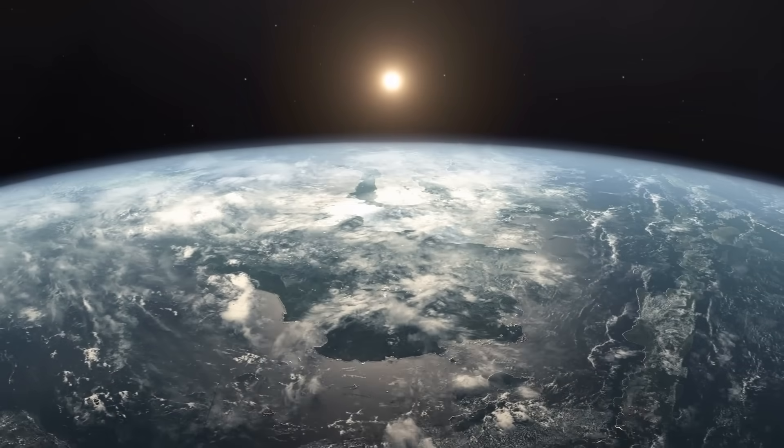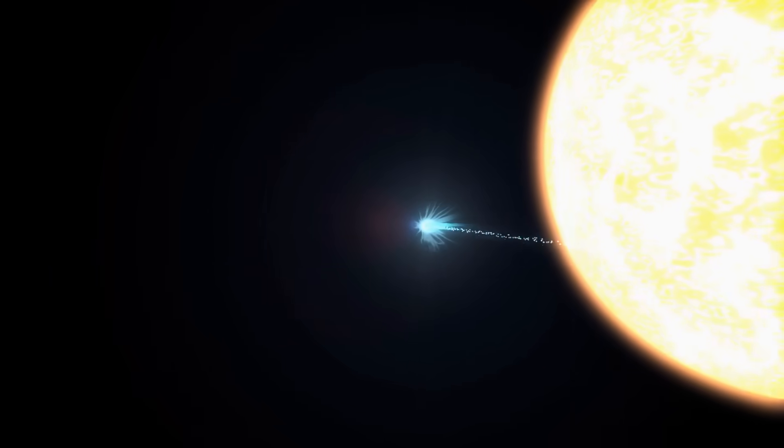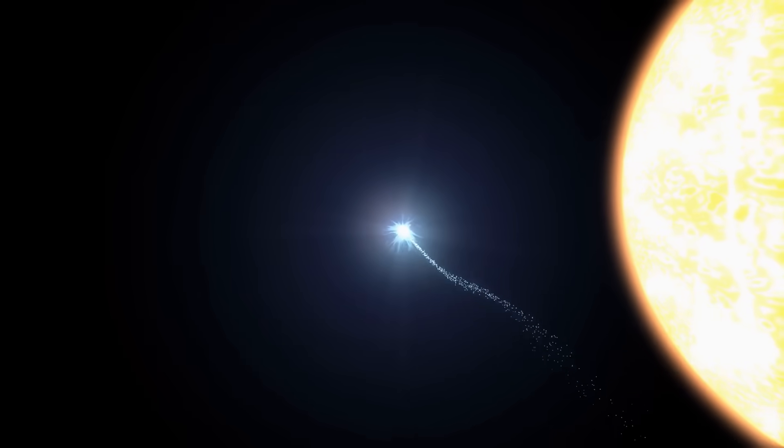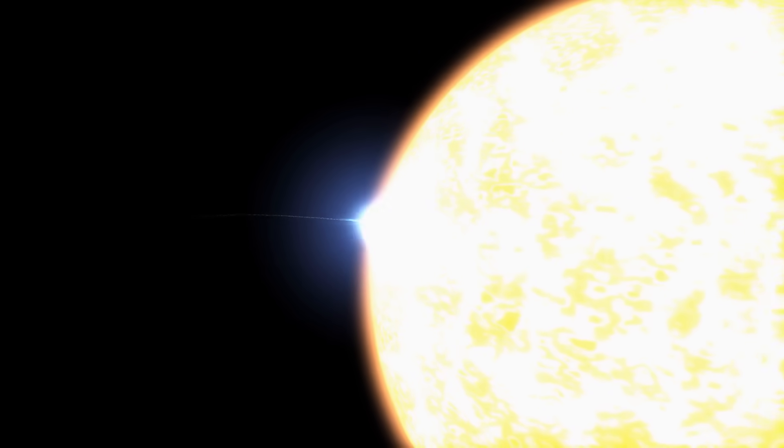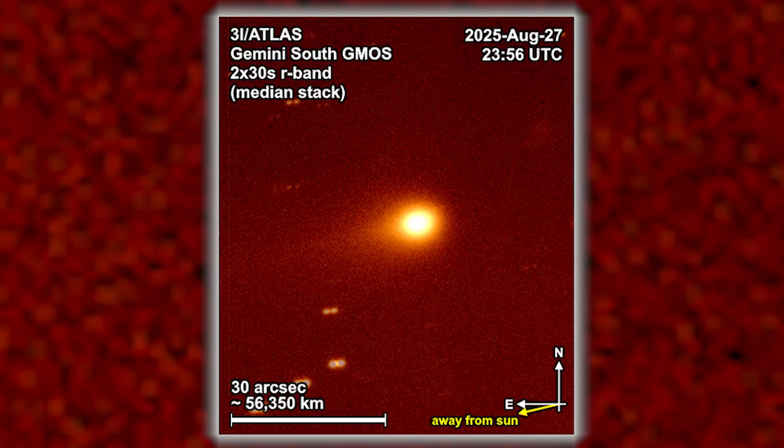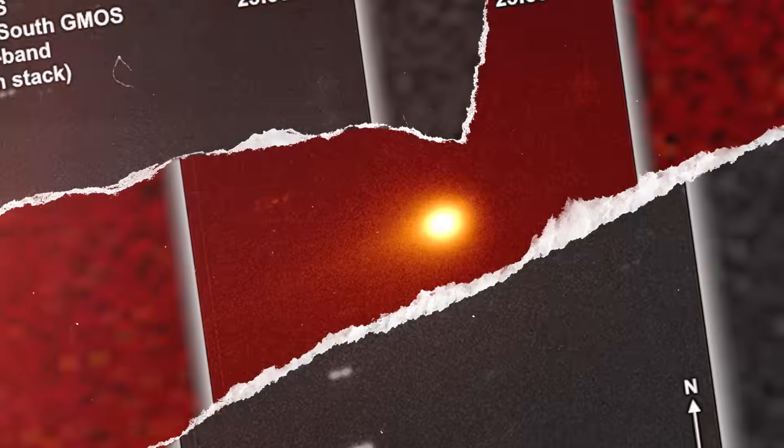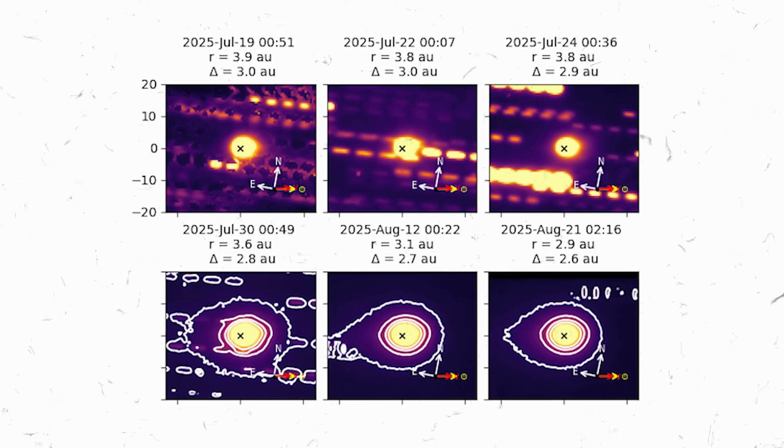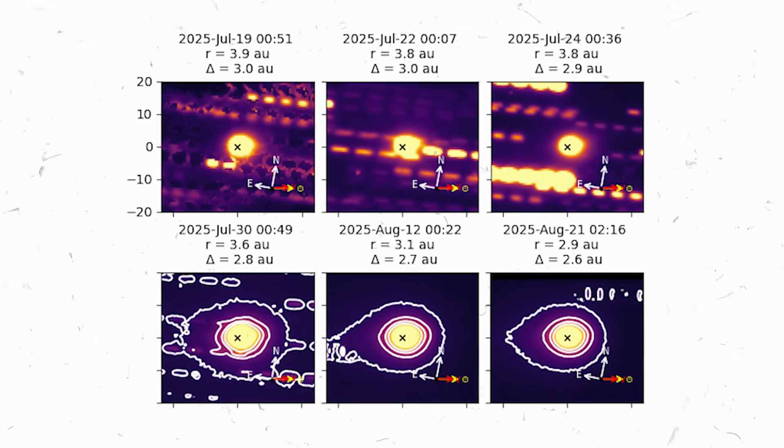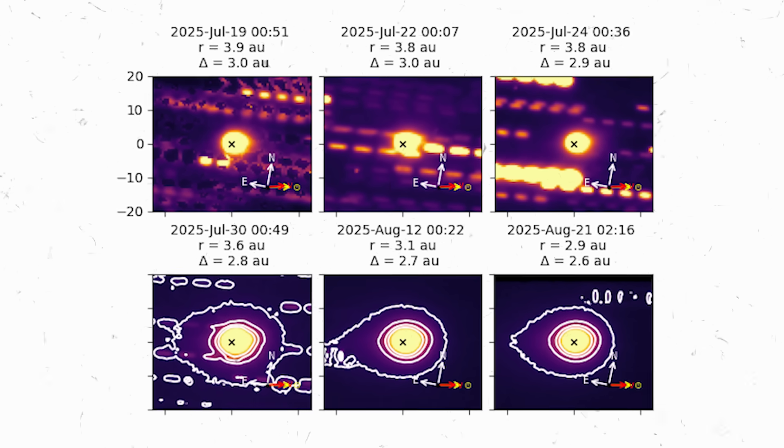As the weeks passed, the data revealed strange behavior. Most comets brighten as water ice sublimates, turning directly from solid to gas when they approach the sun. But this one didn't behave that way. Spectral readings showed that its coma, the diffuse halo of gas surrounding the nucleus, wasn't dominated by water at all. It was carbon dioxide, CO2, glowing faintly through the vacuum.